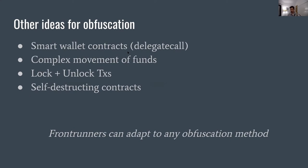There are other ideas for how you can obfuscate transactions and make them more complex. Some of them we tried and were successful for relatively small funds. For example, using some kind of smart wallet that can execute anything with a delegate call, a more complex movement of funds between contracts and accounts, some sort of locking and unlocking mechanism where you have to unlock a transaction first before you can proceed, and a contract that self-destructs after it extracts the funds, which might be more complicated to analyze. The bottom line is that whatever we do — and even presenting this work itself — might give front-runners an edge, and they can probably build more complex software to analyze these transactions and get more efficient.